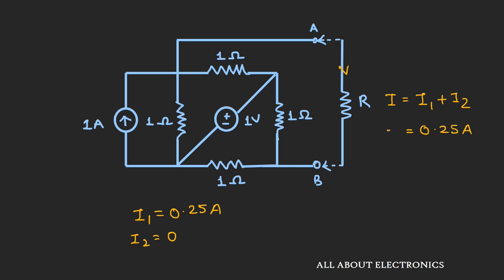In this way, using the superposition theorem, we can find the total current flowing through a resistor.